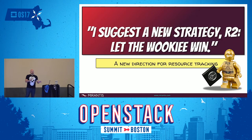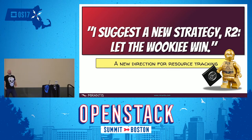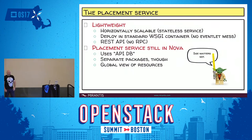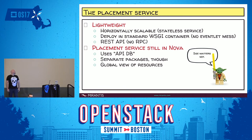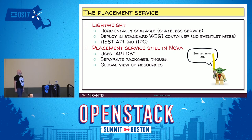So that's a little bit about what we're trying to address. Here's the new direction we've been taking with resource tracking — the placement service. It is a really lightweight REST API essentially. It doesn't have any RPC or messaging stuff in it. It's usable with Apache or NGINX without any eventlet mess.